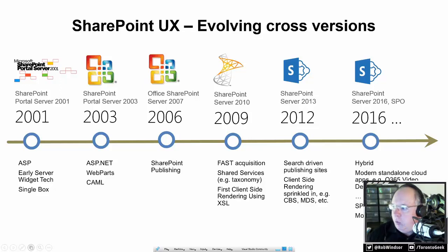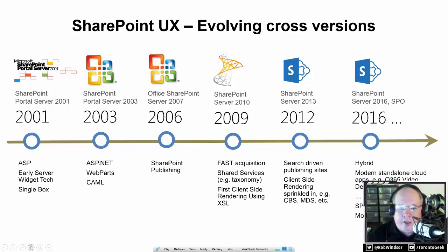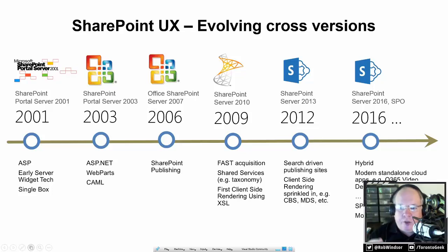Let's start out by talking about why Microsoft created the SharePoint Framework. When Microsoft first started developing SharePoint, it was in the early 2000s. The first version came out in 2001, but the first .NET version came out in 2003. At that point in time, the only web development framework Microsoft had for .NET was ASP.NET web forms. SharePoint grew through versions 2007, 2010, 2013, and Microsoft just constantly added to their code base.